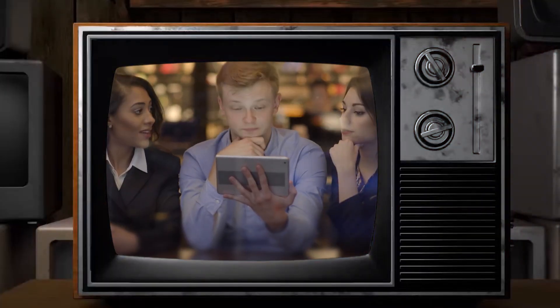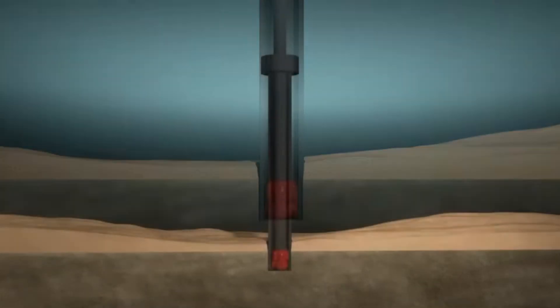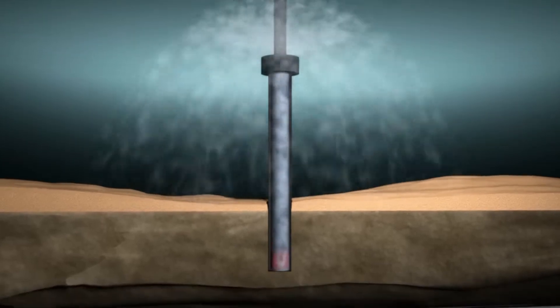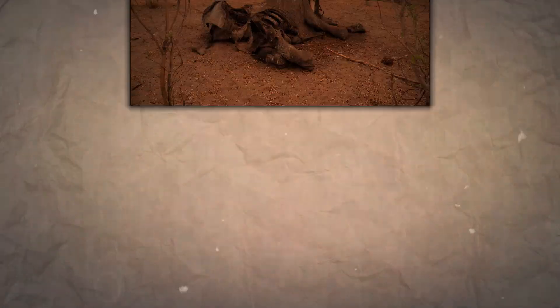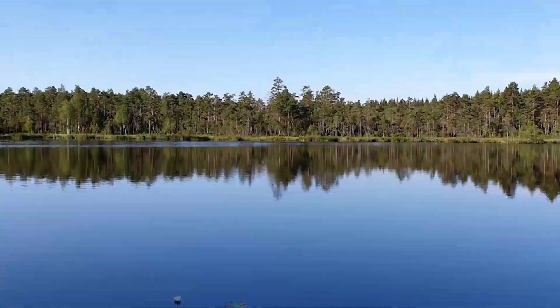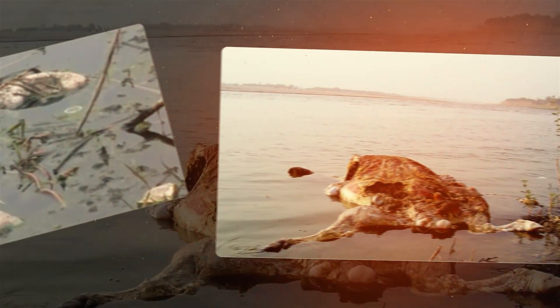The foundation of oil and gas formation begins with the accumulation of organic matter, primarily from dead plants, animals, and microorganisms such as algae and plankton. These organisms lived in oceans, lakes, and swamps millions of years ago. When they died, their remains settled at the bottom of these water bodies, forming thick layers of organic-rich sediment. These organic deposits are the primary source of hydrocarbons, the chemical compounds that make up oil and natural gas.